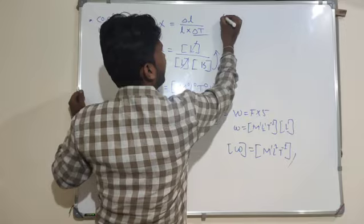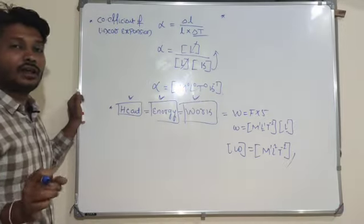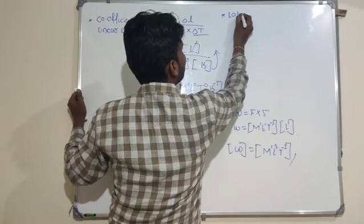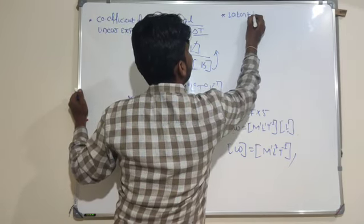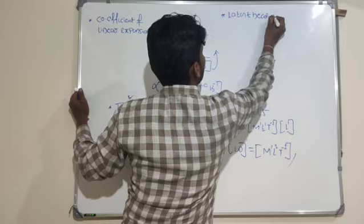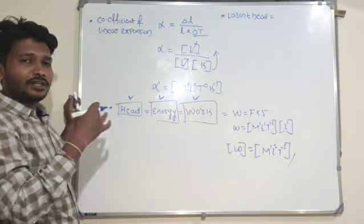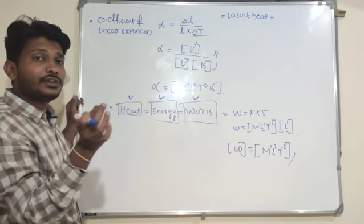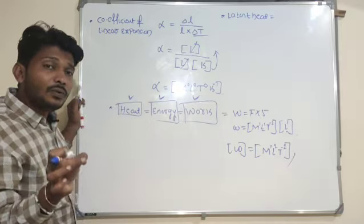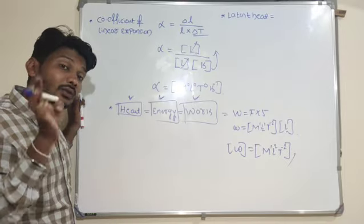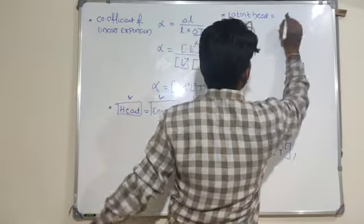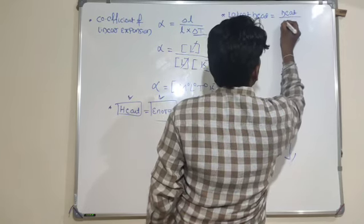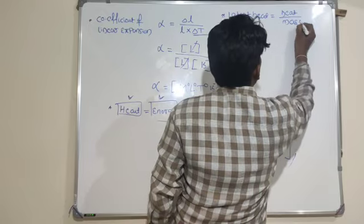Now let me write the dimensional formula for another physical quantity — latent heat. Latent heat is nothing but the ratio of heat by mass.